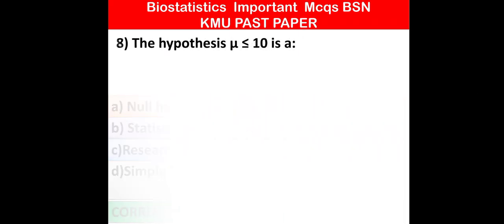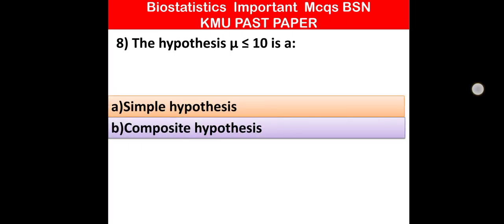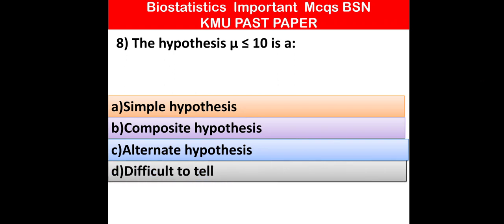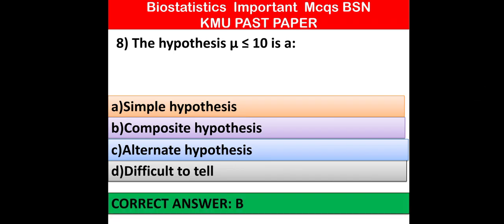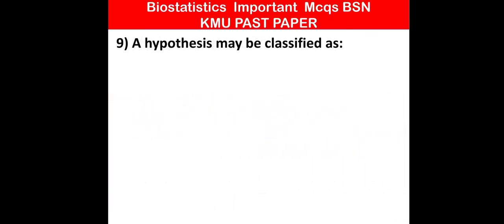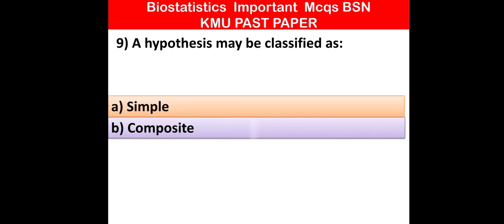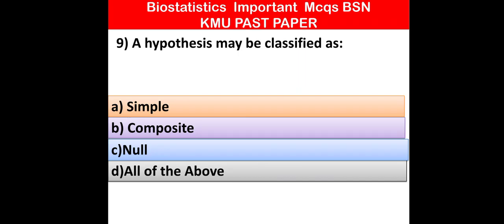MCQ number 8 and 9: A hypothesis may be classified as — sample, composite, null, or all of the above. Option B is correct: composite hypothesis. A hypothesis may be classified as sample, composite, null — option all of the above is correct.